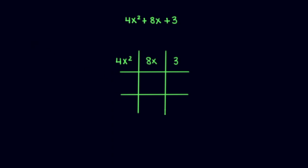So we could try something like 4x and x and switch the positions of 3 and 1. That will give us 4x in the middle and 3x on the bottom.